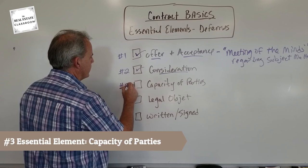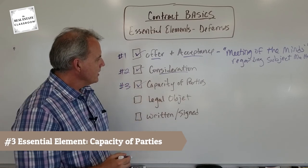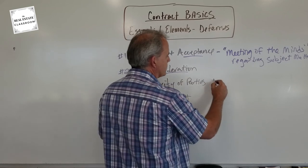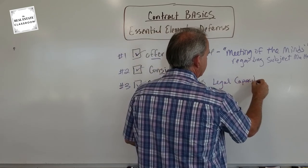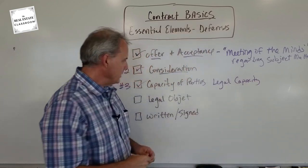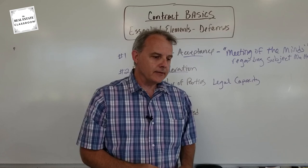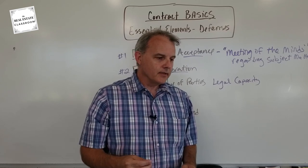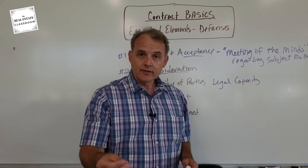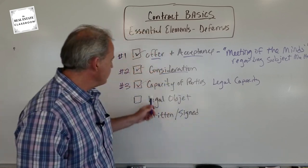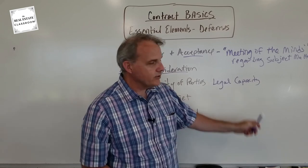Element number three: capacity of the parties. This simply means that they have the legal capacity to enter into a contract. For example, if somebody has been declared incompetent because they have dementia and a court has declared them so, they would not have the capacity to enter into a contract.